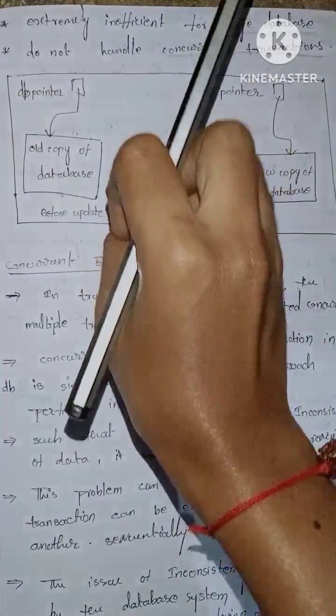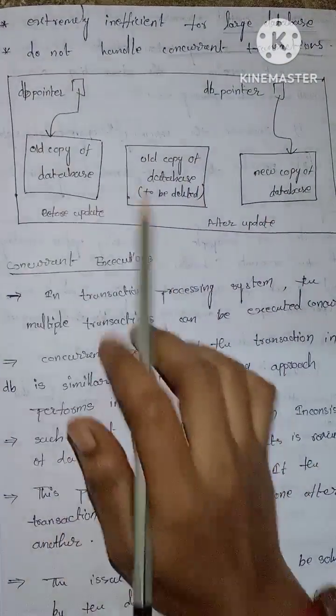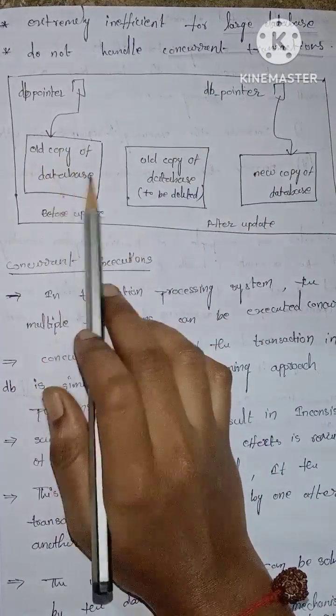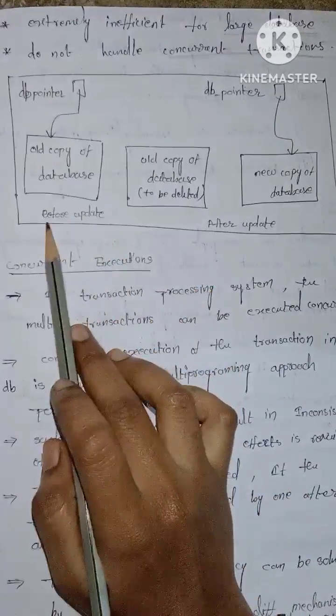This diagram shows the old copy of database with db-pointer before update and the new copy of database after update.